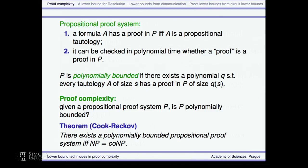To see this is straightforward. A propositional proof system is essentially a non-deterministic Turing machine solving a coNP-complete problem — deciding whether something is a tautology. The fact that it is polynomially bounded means the non-deterministic Turing machine runs in non-deterministic polynomial time, which means a polynomial bounded proof system exists if and only if NP equals coNP. So the systems I mentioned — Frege, resolution, cutting planes — should not be polynomially bounded unless NP equals coNP.